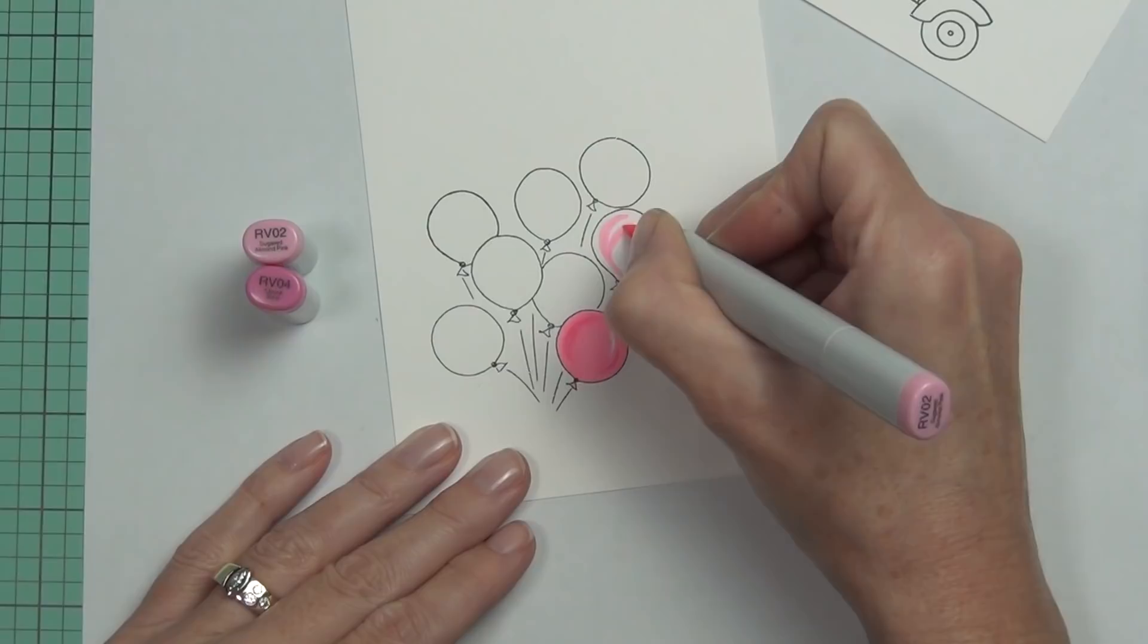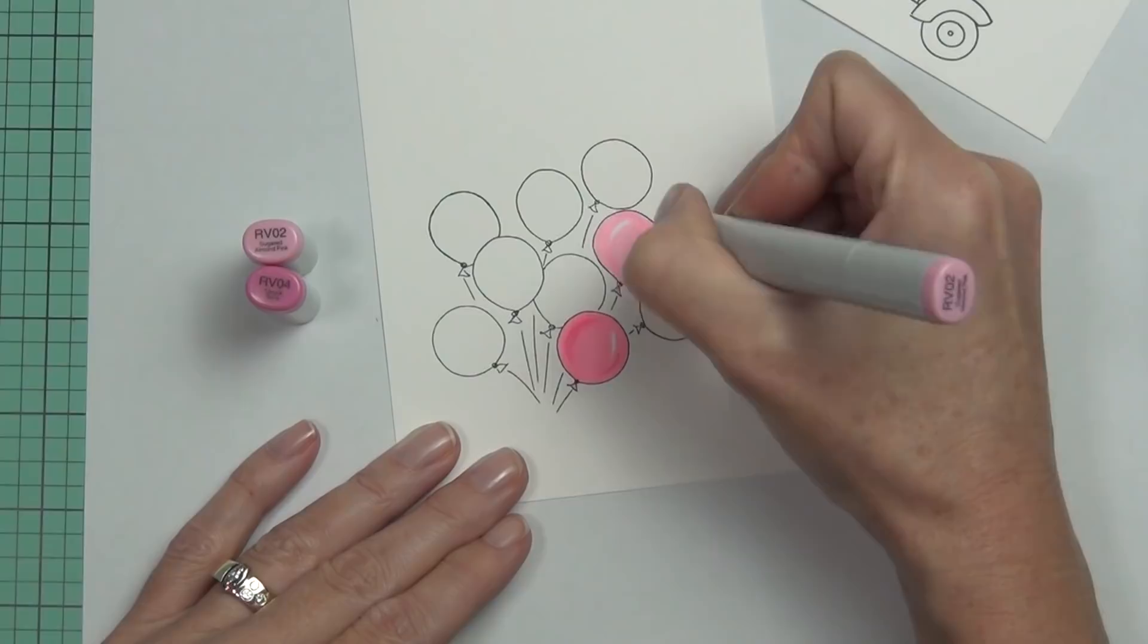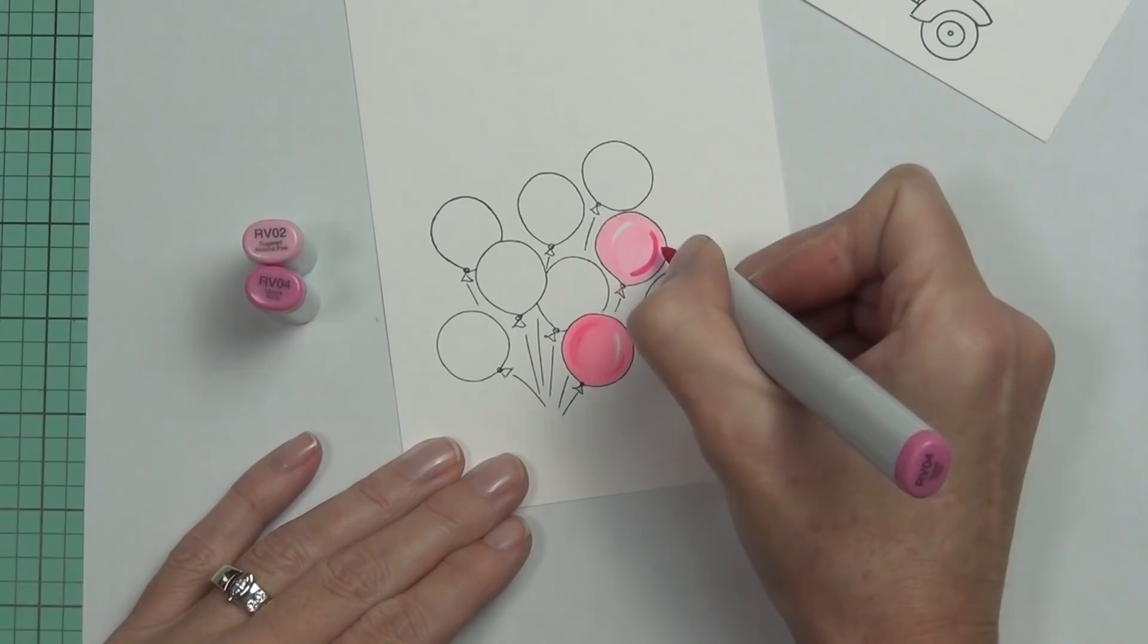Speaking of balloons, I need a lot of practice coloring them, so I did here. This is part of a Penny Black image called Birthday Balloons. I've stamped it out with some Tuxedo Black, and I just thought I'd share the coloring of one of the balloons with you.